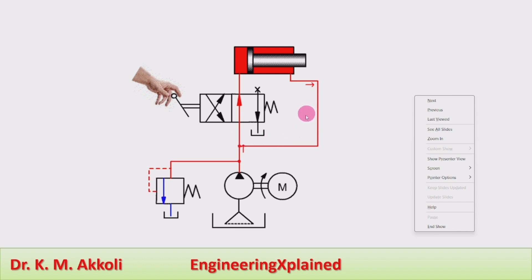If the regenerative flow QR is added to the Q pump, then the total flow rate will be more. The rate of flow entering during the extension stroke will be more, and that's why the extending speed will be increased.